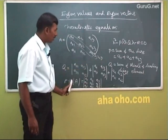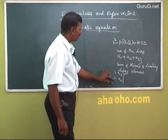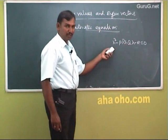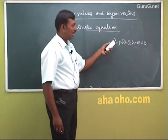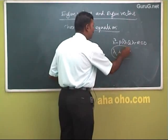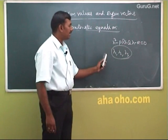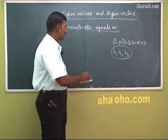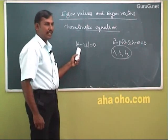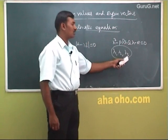After computing p, q, and r, substitute into λ³ − pλ² + qλ − r = 0. To solve this cubic equation, apply the synthetic division method to reduce it to a quadratic, then solve for the three roots λ₁, λ₂, λ₃, which are the eigenvalues. For a 2×2 matrix, det(A − λI) = 0 gives a quadratic; for 3×3, a cubic.